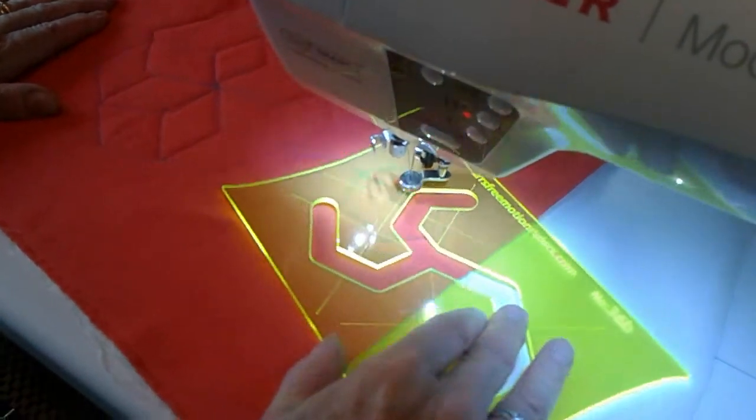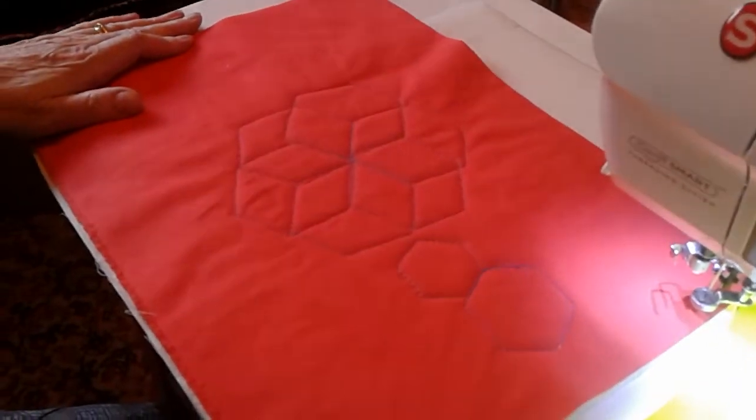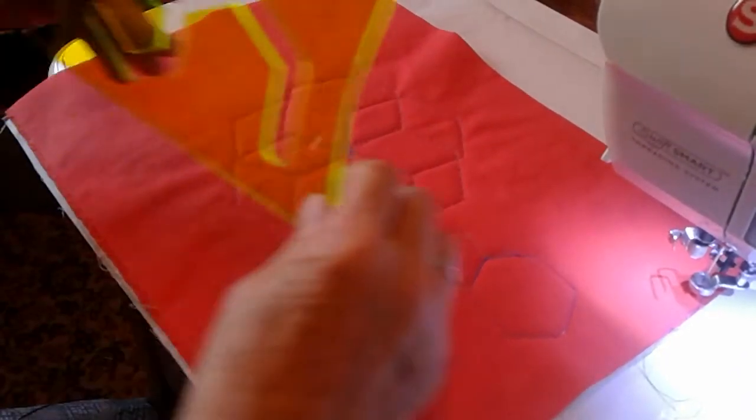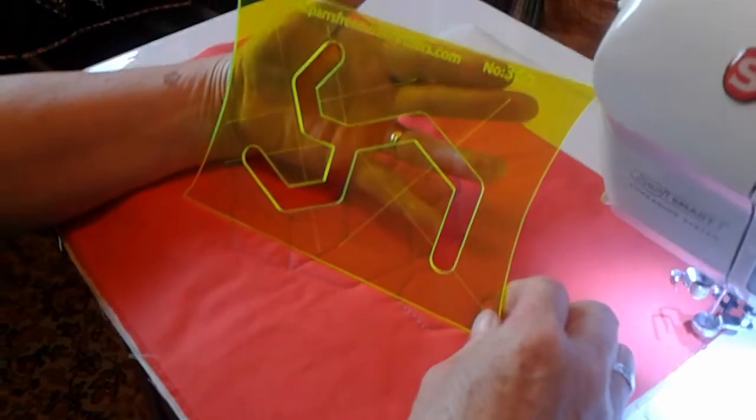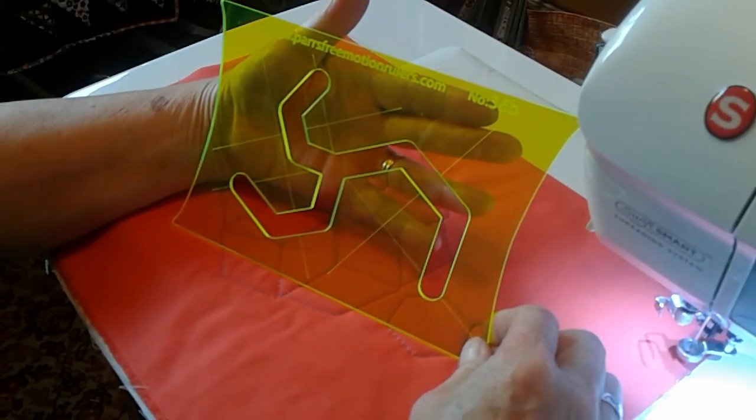That you can stitch around whatever you've got on your quilt. That's the number 36B hexagons. Enjoy.